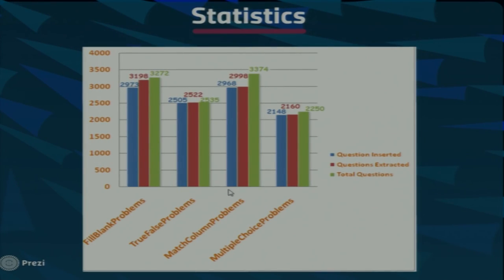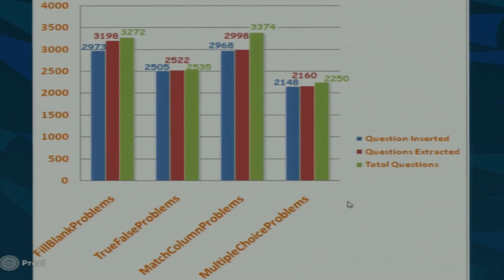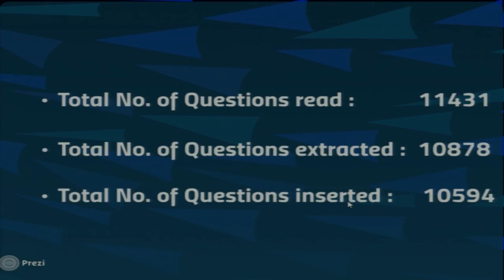The blue bar in the chart shows questions actually inserted into the database, which is slightly less than the number of extracted questions. This is because the database API also applies validity checks. Approximately 10,900 questions were extracted, but only around 10,600 went into the database — nearly 2% were rejected by the database due to checks like null values.